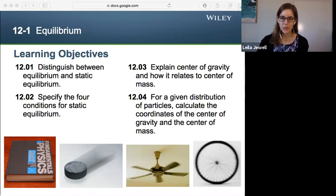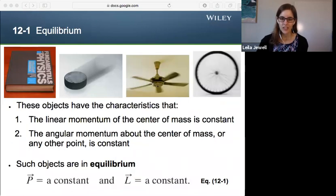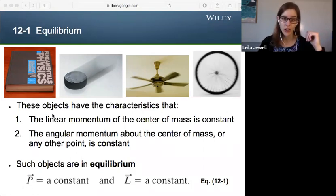So, what does equilibrium mean? They all have the characteristic that the linear momentum of the center of mass is constant. The angular momentum about the center of mass, or any other point, is also constant. So note, to be in equilibrium doesn't mean that you're stationary, necessarily. It just means that you have a constant linear or angular momentum. That the P, the system is a constant, or the L is a constant. And that's true for all of these.